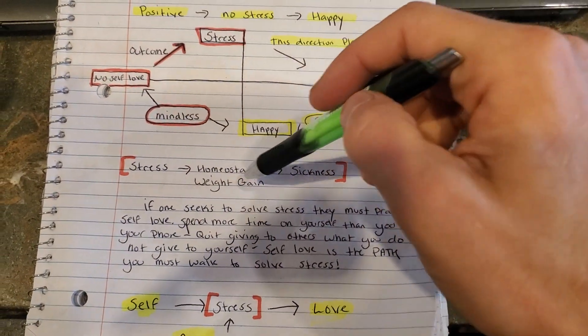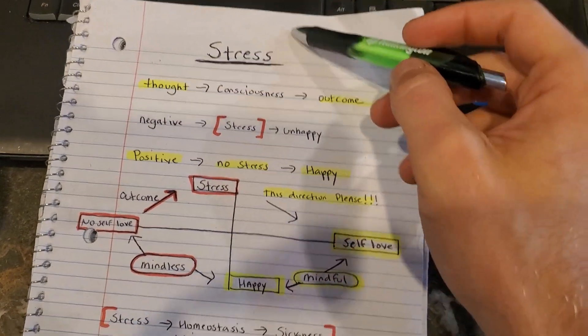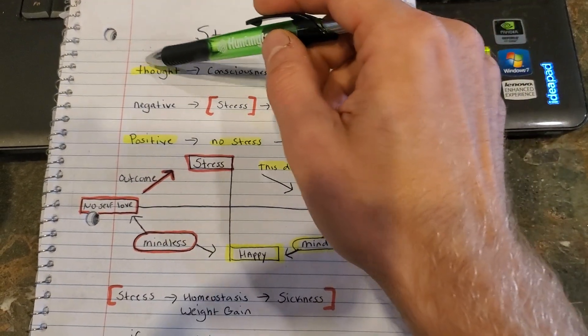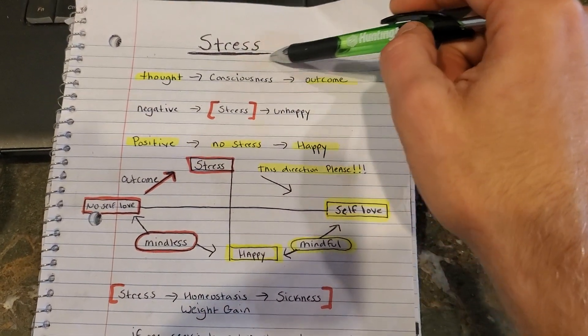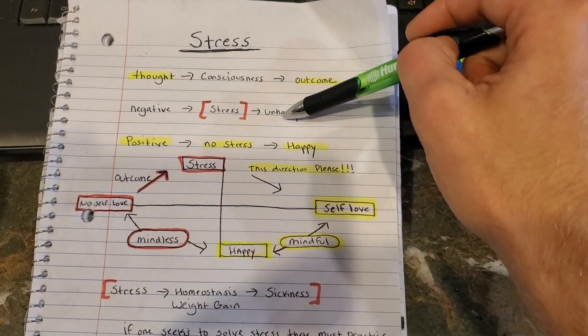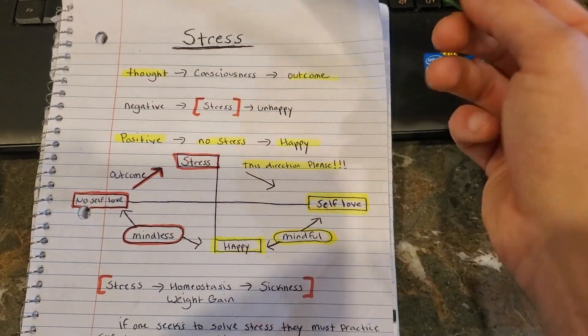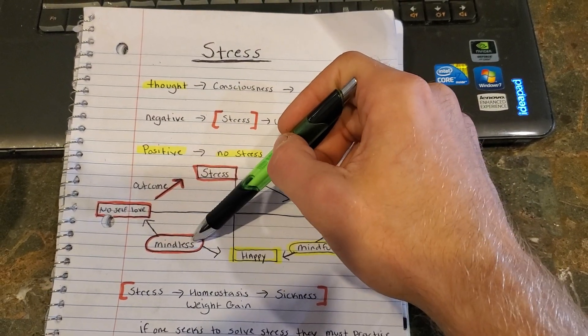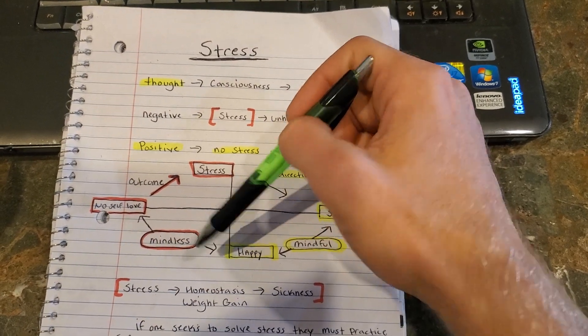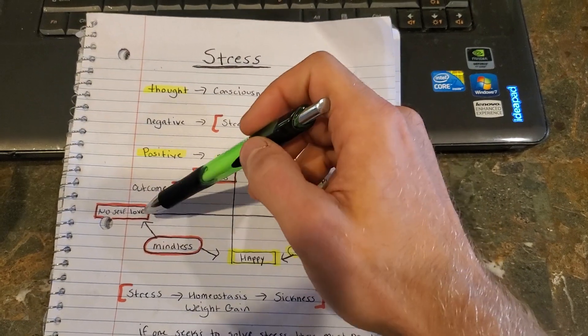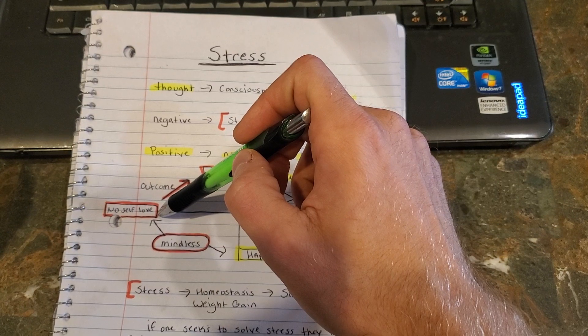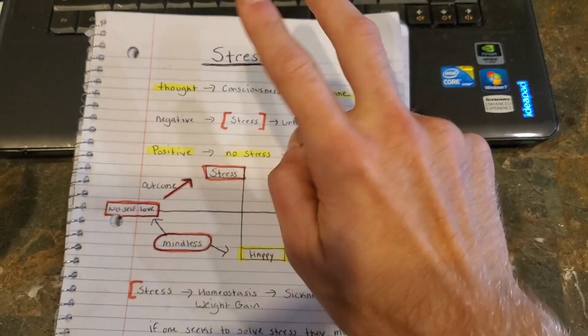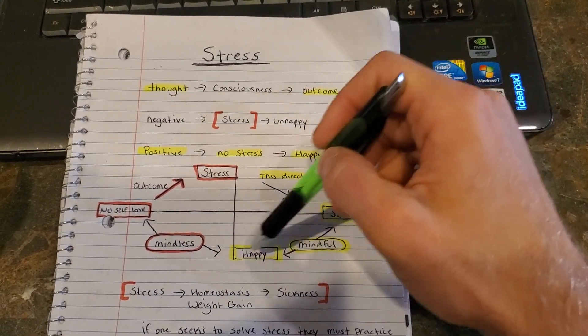So stress is another factor that can actually alter your homeostasis and can lead to weight gain. So let's explain why removing stress from your life is so important. So when you have a thought, depending on your level of consciousness is going to be your outcome. How conscious you are of how this world functions and works is the in between factor. You're going to think things, things are going to happen. Thoughts are going to be going through your brain, depending on how conscious you are is going to be the outcome that you produce. If you come up with an outcome of negative, that's probably going to cause stress and make you unhappy. If you come out with an outcome that's positive, you're probably gonna have no stress and that's going to make you happy. So between no self love and self love, you can still be happy, but no self love is going to be a mindless version of happiness.